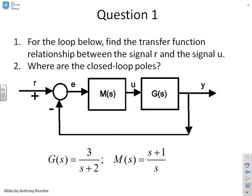First question: for the loop below, find the transfer function relationship between the signal R and the signal U. You'll notice R is a loop input, U is a signal in the loop. Also, where are the closed loop poles?